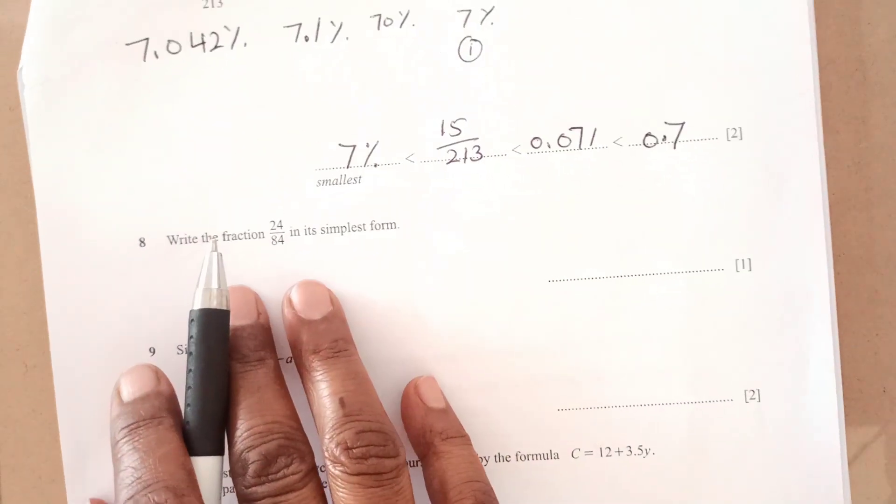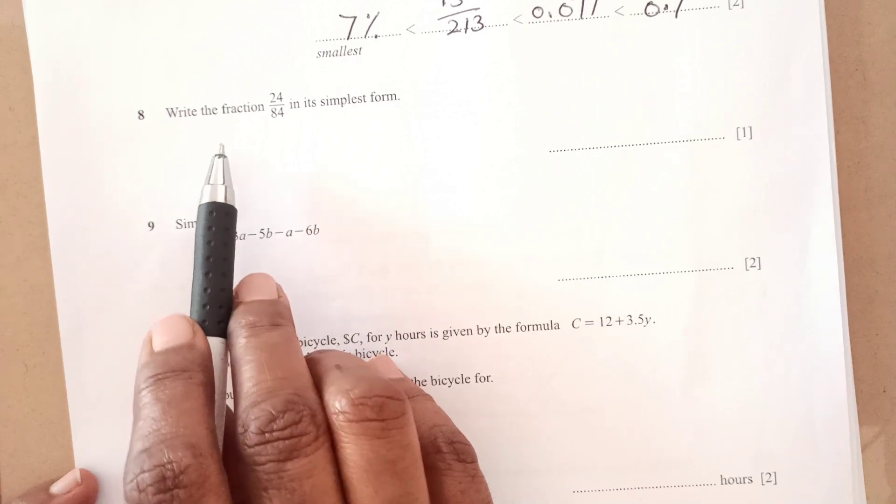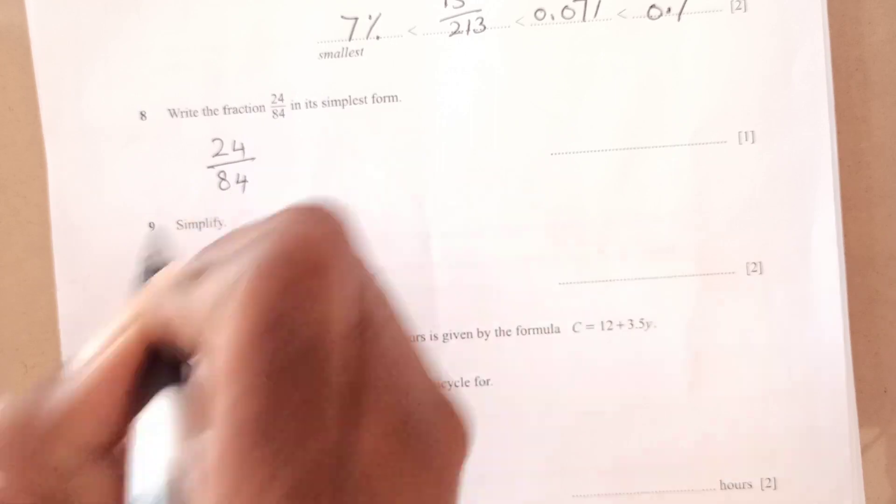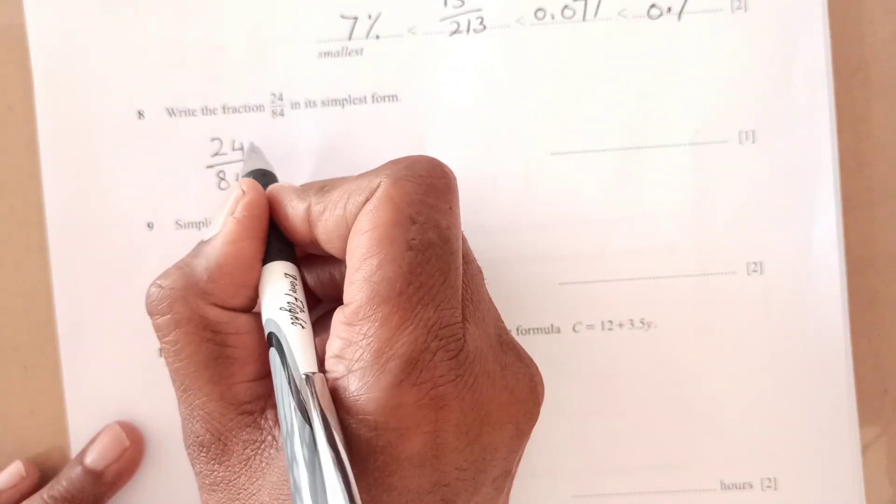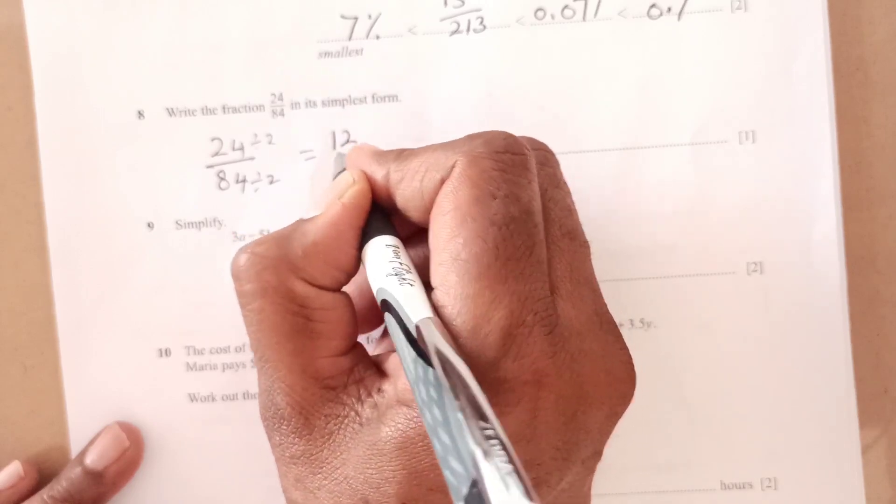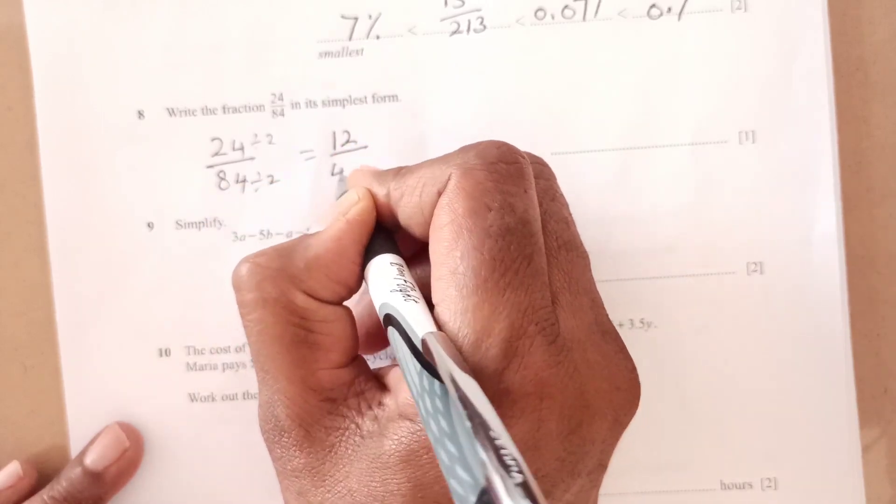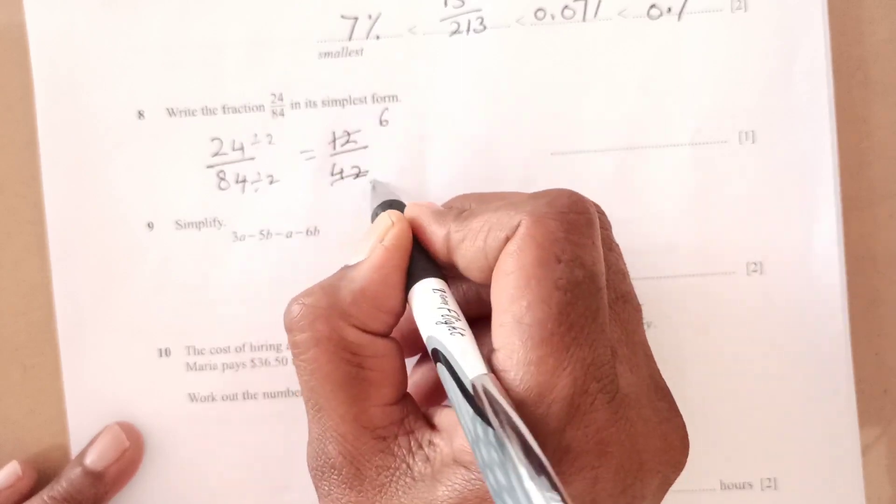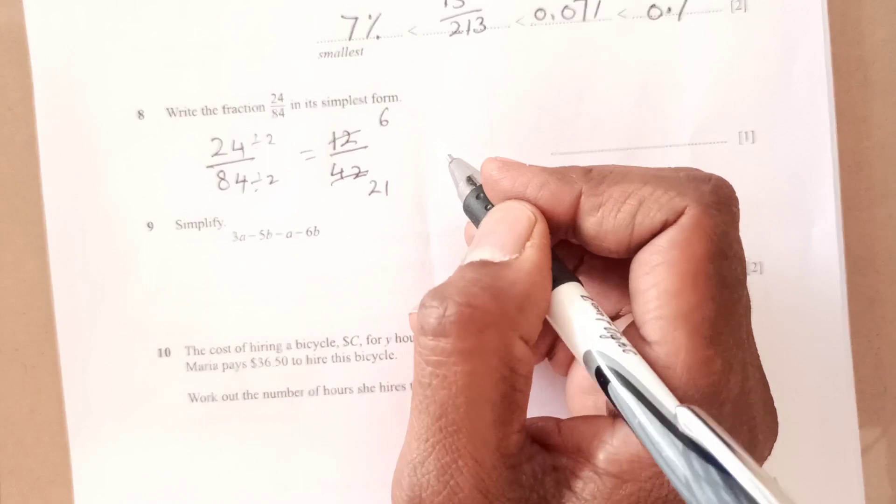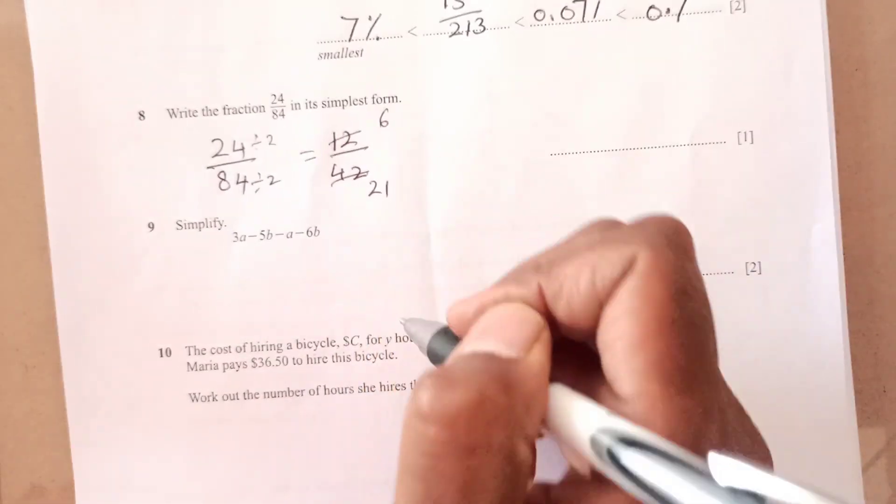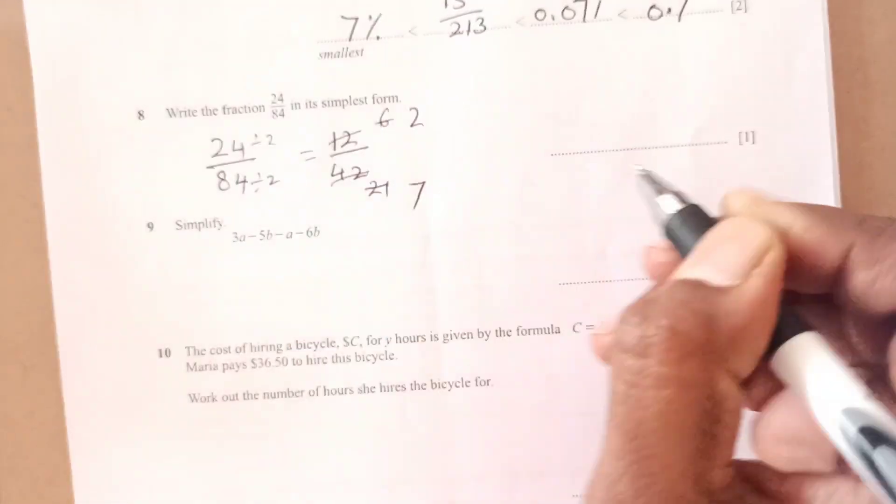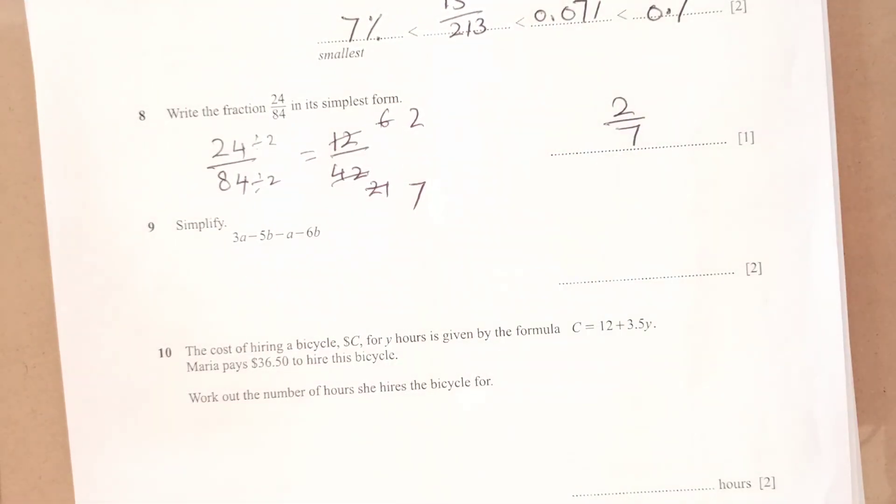Now, we have question number 8. Write 24 over 84 in the simplest form. This is very simple question. You are just going to divide it by 2. That becomes 12 over 42. Again, divide by 2. Now, they both are divisible by 3. So this is going to be 3 times 2, 3 times 7. So 2 over 7 is final answer.